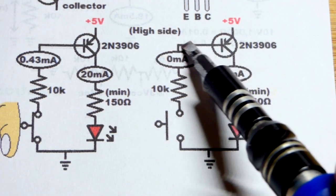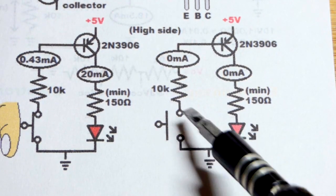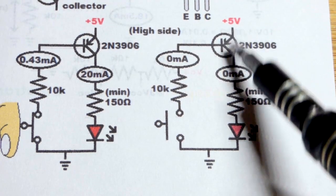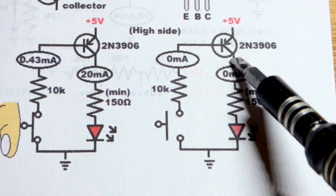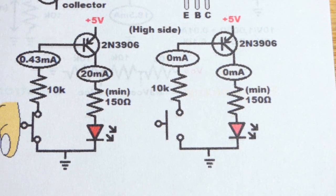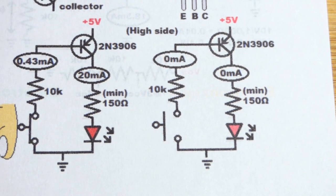But in any case, if there's no emitter to base current, because you have an opening here, current can't flow, then there's going to be no current from emitter to collector. And thus, everything in series with it will also have no current. So that is cut off or an off switch.